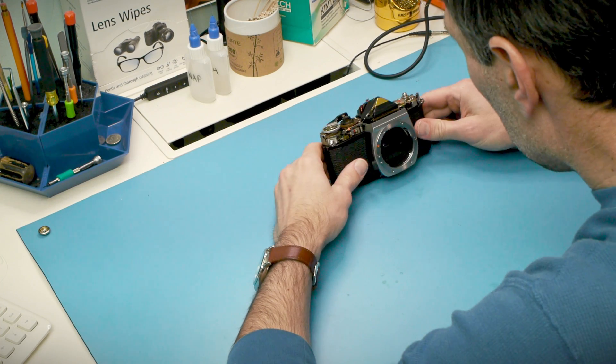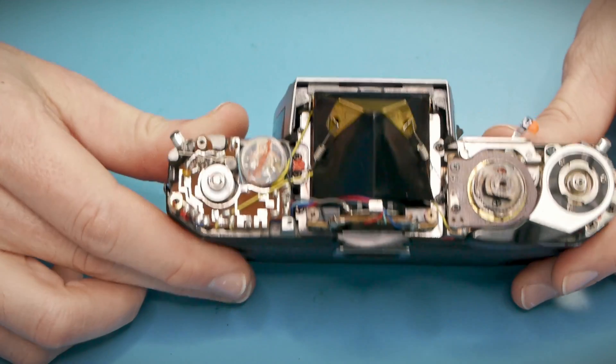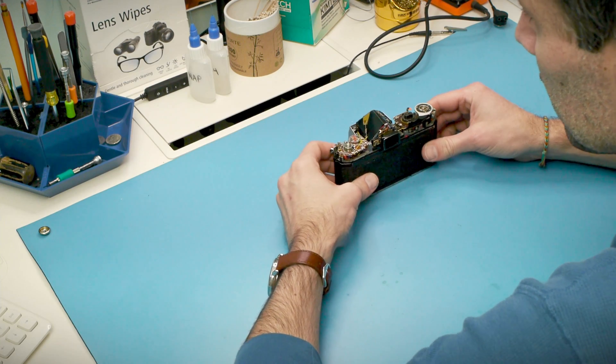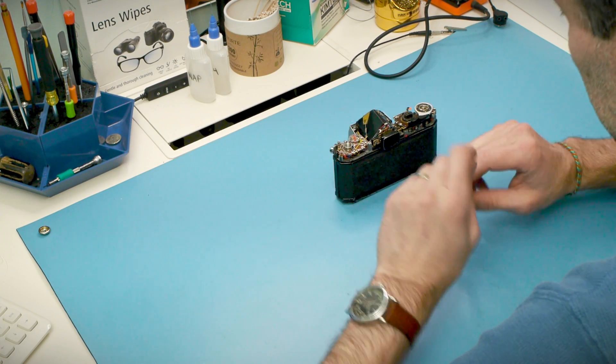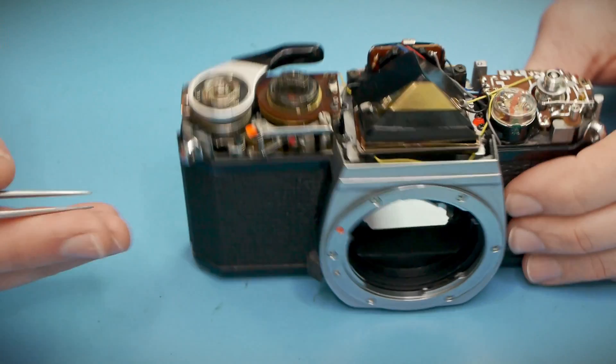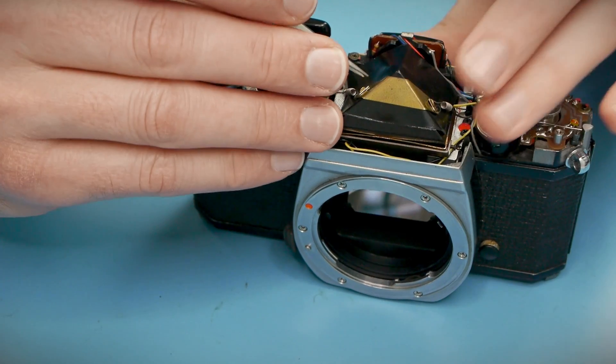On the bench today is a Pentax K1000. I've just begun the disassembly and today I'm going to get into the heart of the camera by removing the mirror box. That will give me access to pretty much all of the mechanisms inside the camera that need servicing.